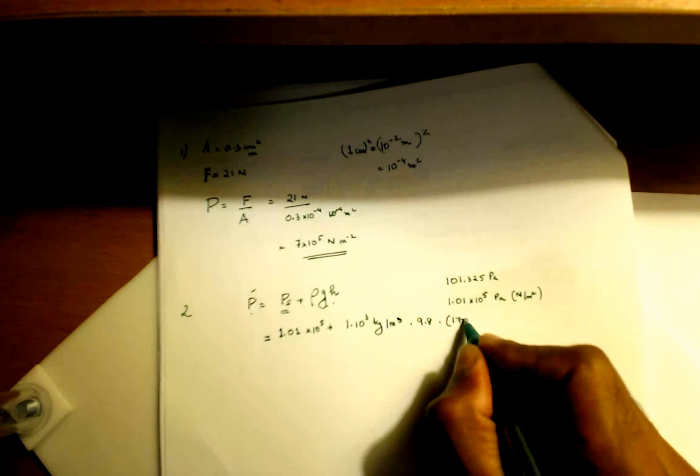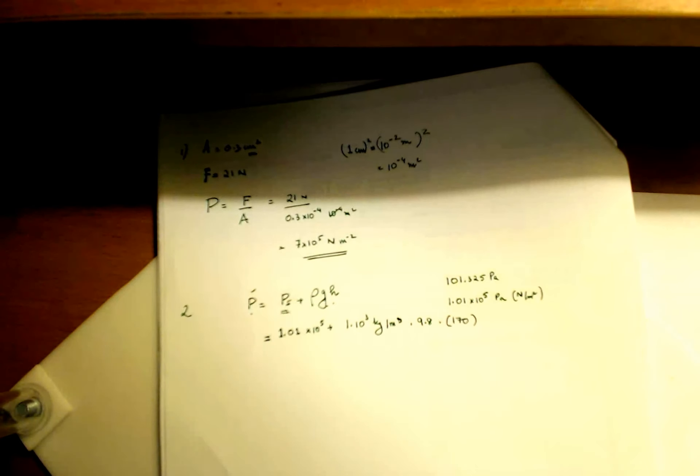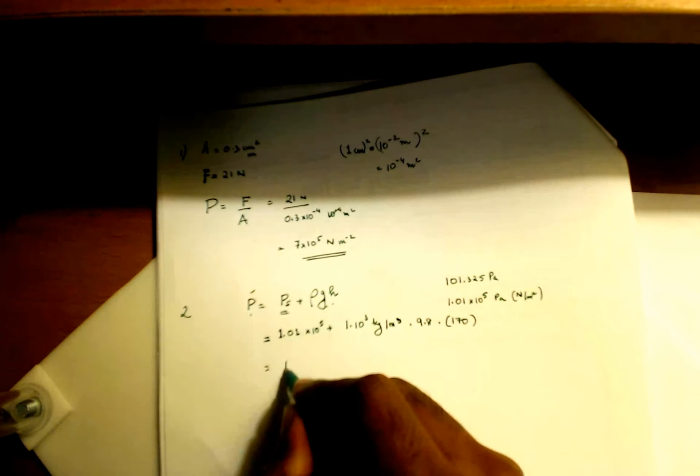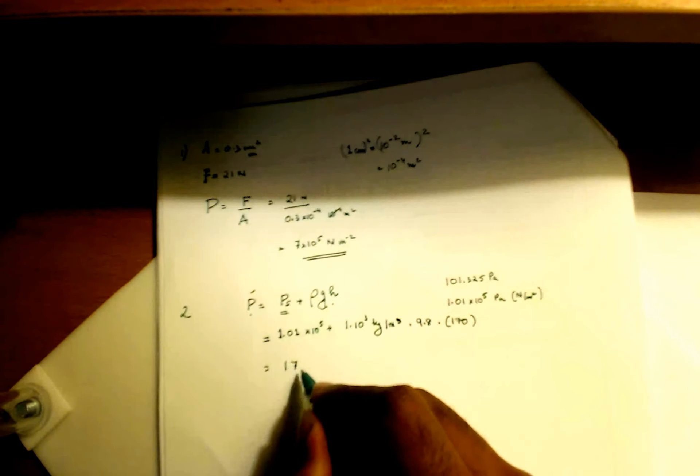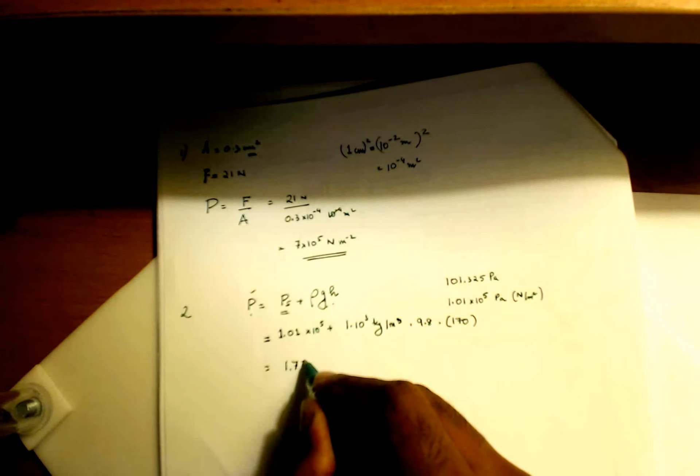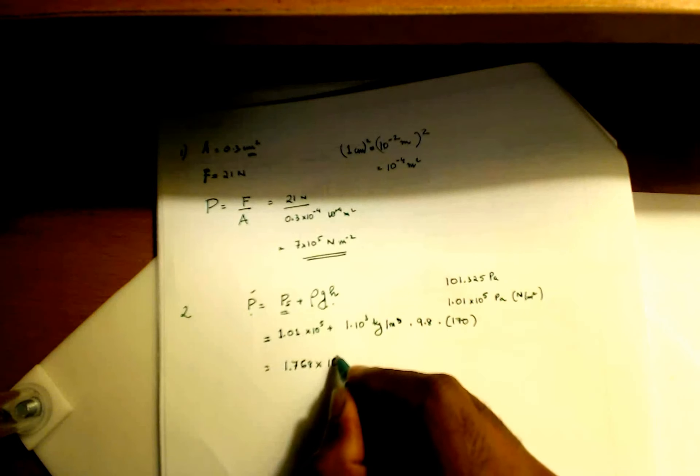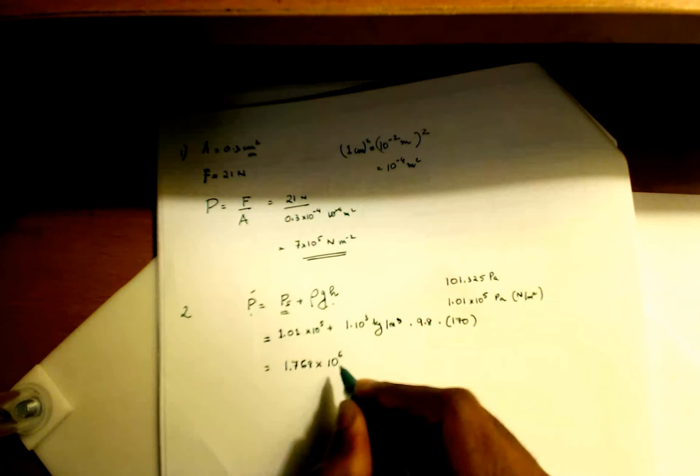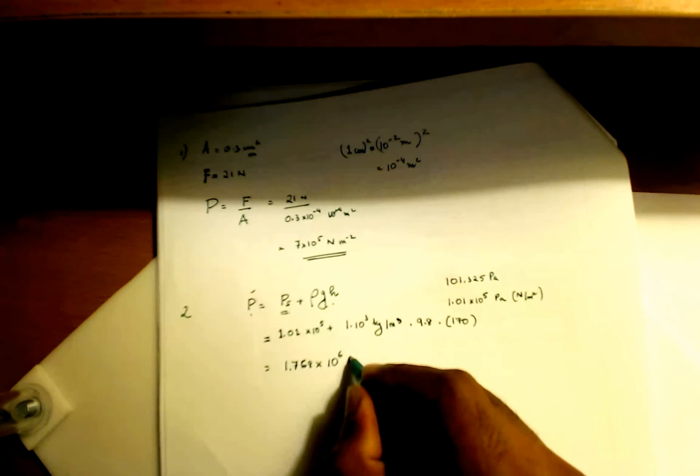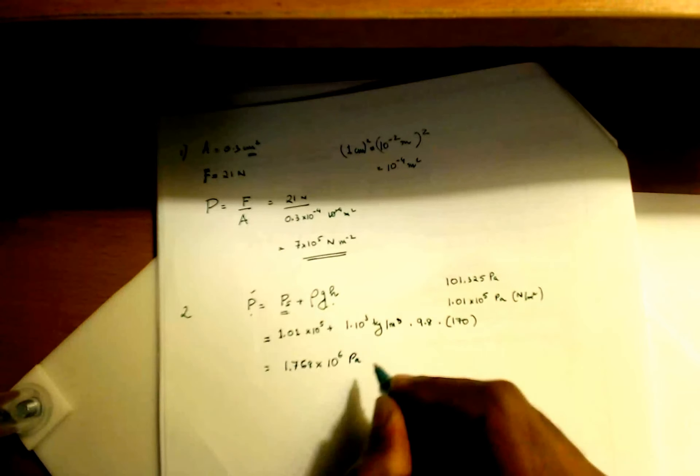Times 9.8, which is G, times your height. And your height in this question is 170 meters deep, so times 170. And when I do this math I'll get the answer as 1.768 something something times 10 raised to 6 pascals, which is Newton per meter squared.